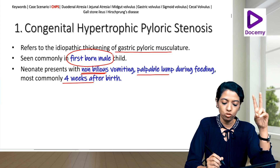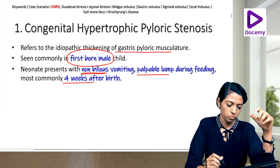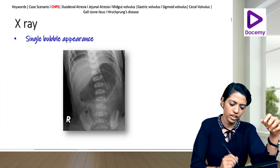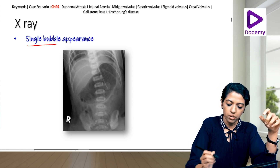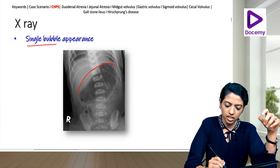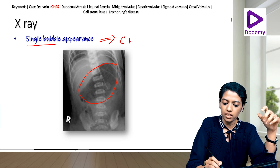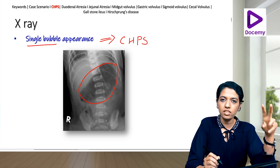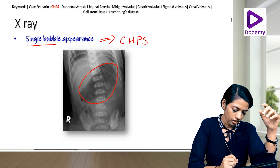CHPS is most commonly seen four weeks after birth, due to idiopathic thickening of the gastric pyloric musculature. On x-ray you get a single bubble appearance — so single bubble corresponds to CHPS with non-bilious vomiting.